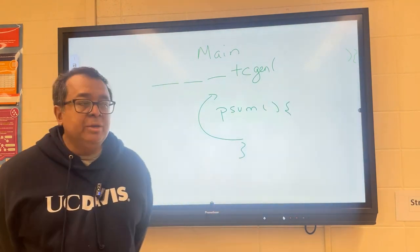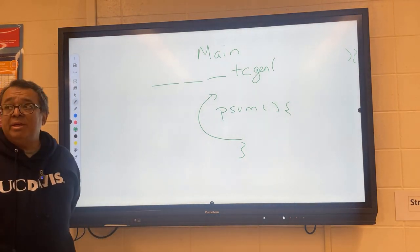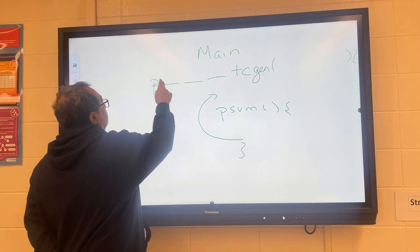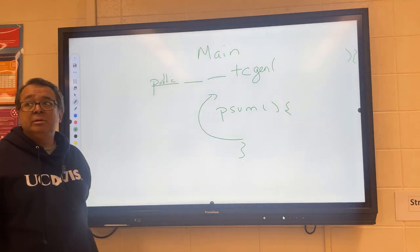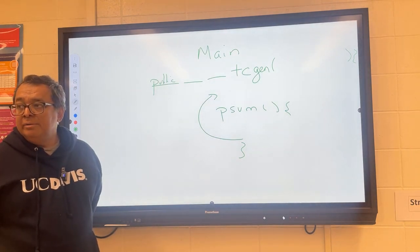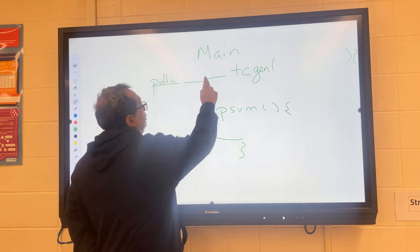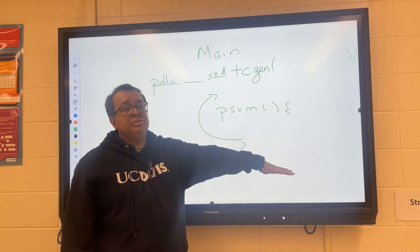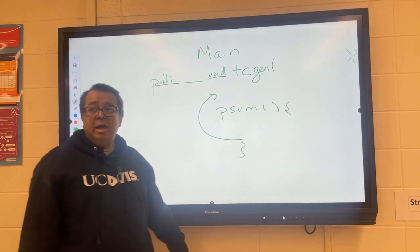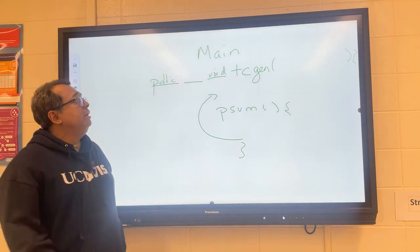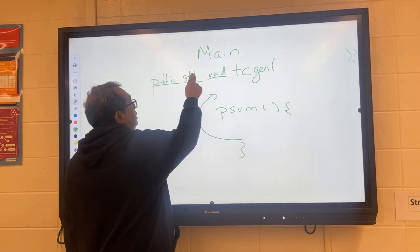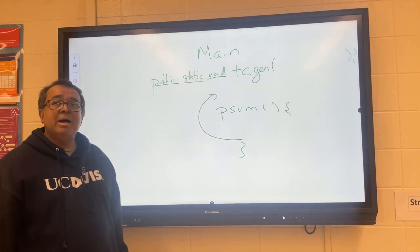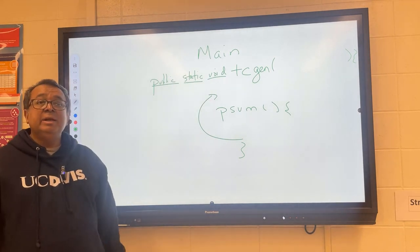Mr. Moises, can you tell me the three keywords in front of the method? Public — anyone should be able to call it. What else? This isn't going to return anything, it's just going to print all the answers and the count. And the third keyword: static — because we're not using any state variables. So it's public static void.